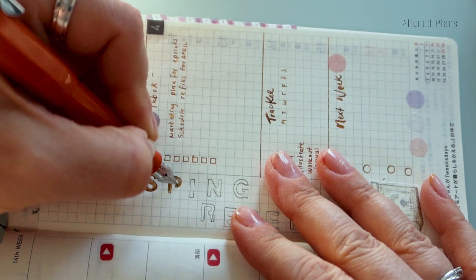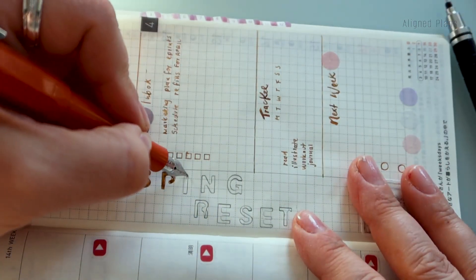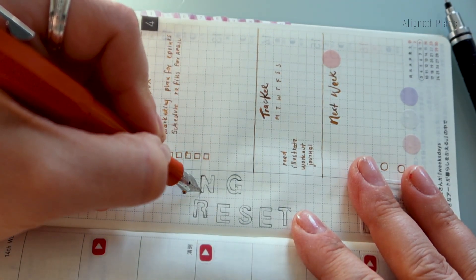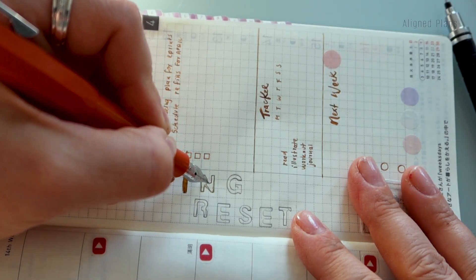And I usually outline it with a pencil and then I kind of go over it with my pen and just fill it in. Even that in itself, especially if you're using a fountain pen, adds this nice base color for your spreads, which I really, really love.